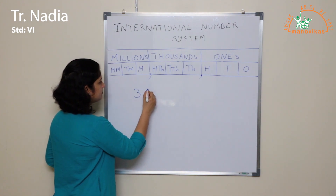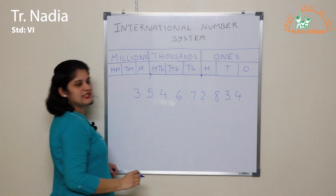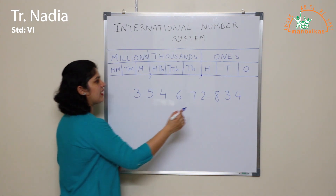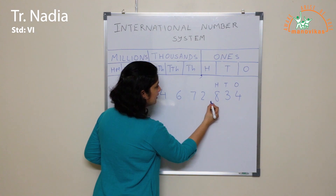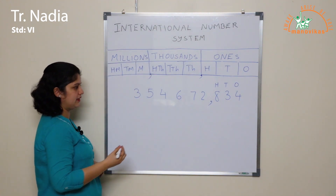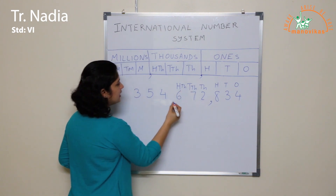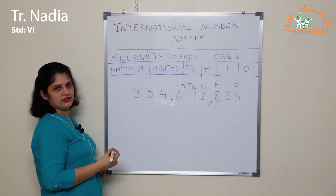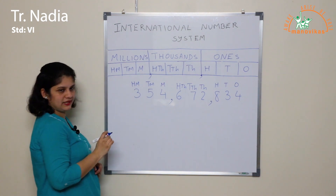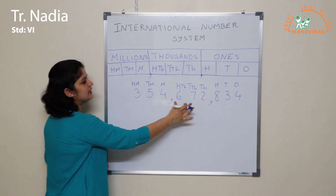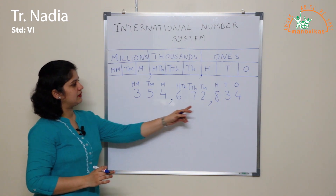Consider an example. Let us first separate the digits into the various periods. First we have the Ones period which has Ones, Tens, and Hundreds. Then a comma separates it from the Thousands period, which has Thousands, Ten Thousands, and Hundred Thousands. Another comma separates it from the Millions period, which has Millions, Ten Millions, and Hundred Millions. Every period is separated by commas.